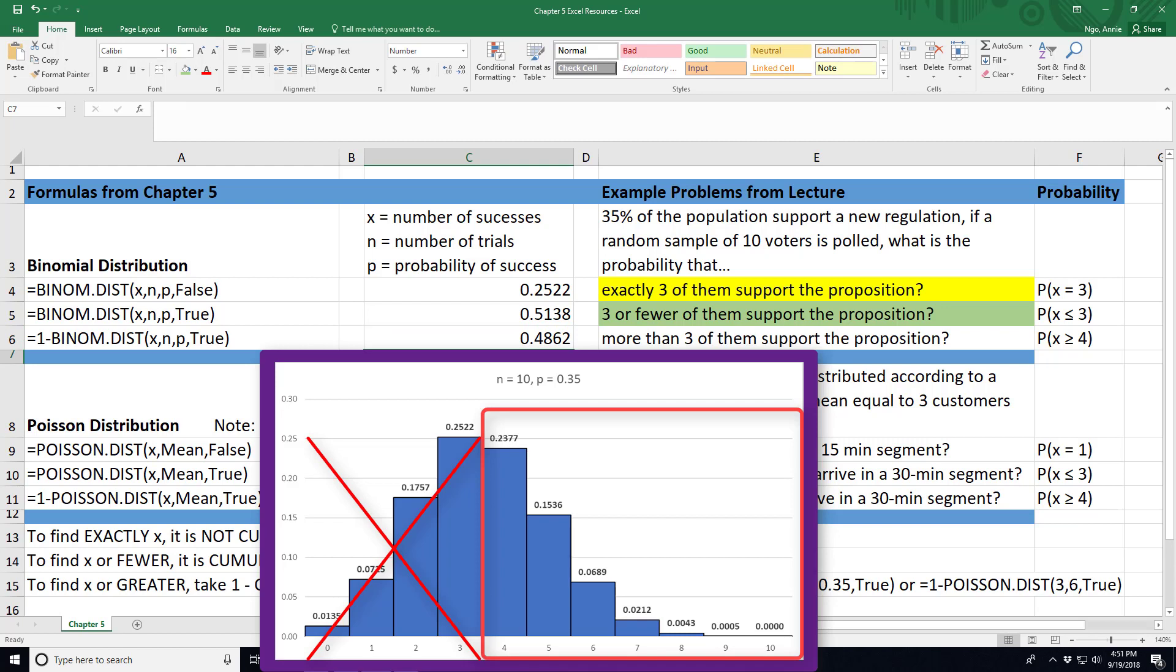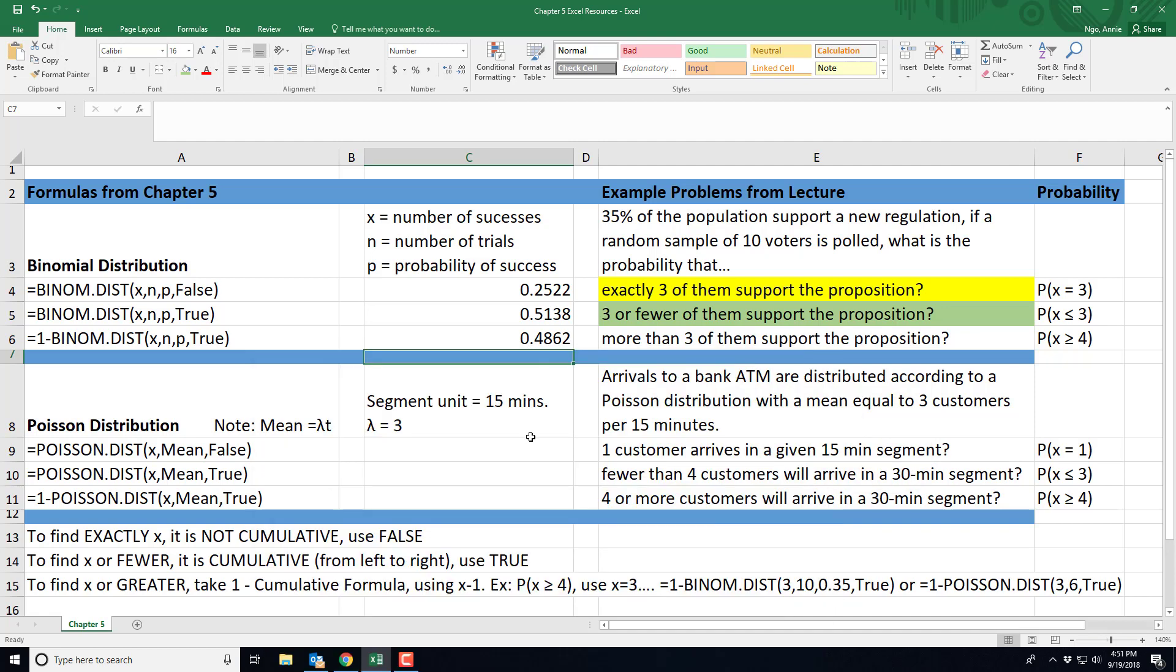I hit enter and I get the probability that more than 3 people support the proposition at 0.4862. If you have any questions, just let me know. Thank you.